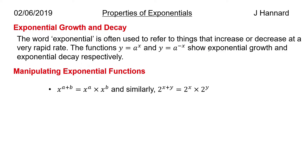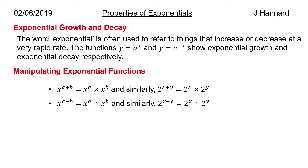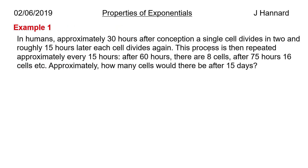Manipulating an exponential function. x to the a plus b is equal to x to the a times x to the b — simple power laws. Similarly, 2 to the x plus y equals 2 to the x times 2 to the y. And x to the a minus b equals x to the a divided by x to the b; similarly, 2 to the x minus y equals 2 to the x divided by 2 to the y.